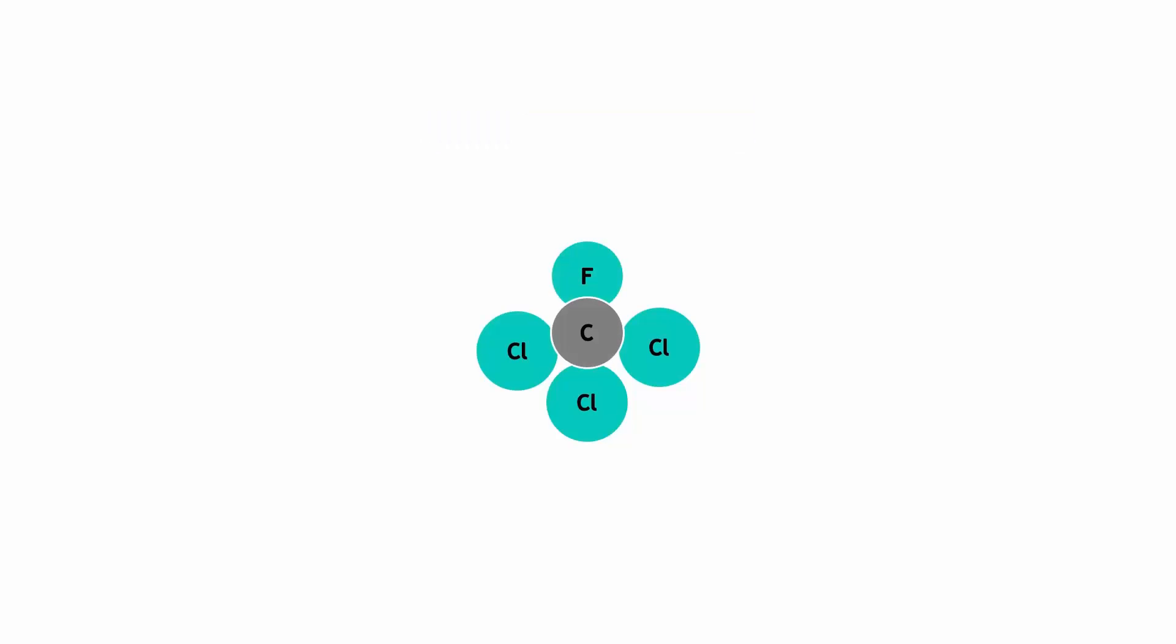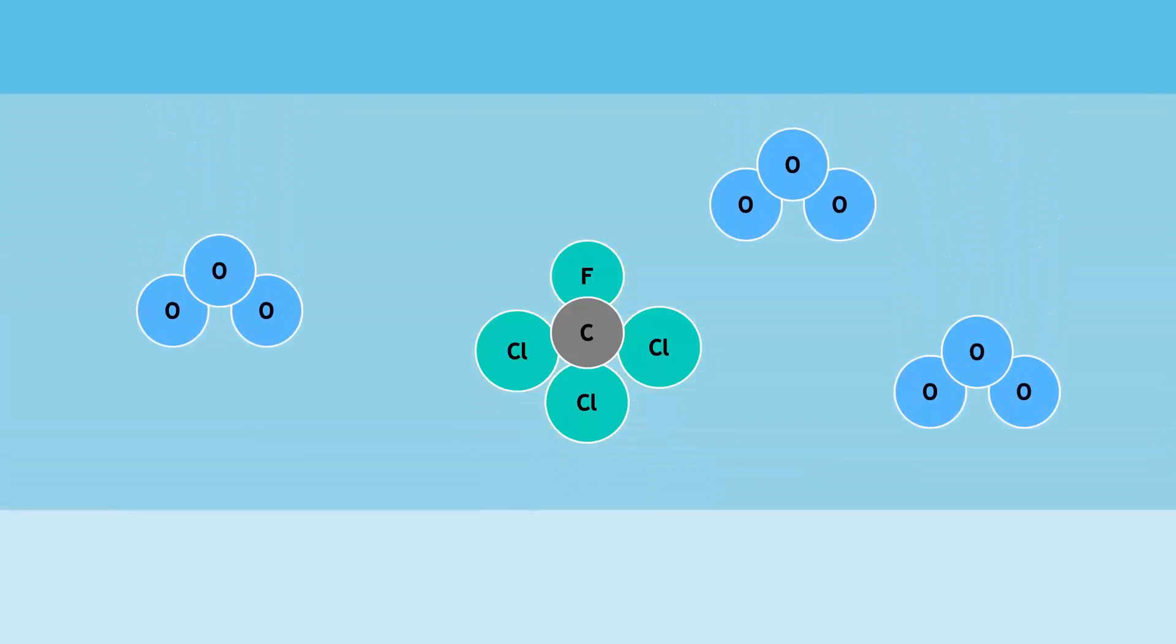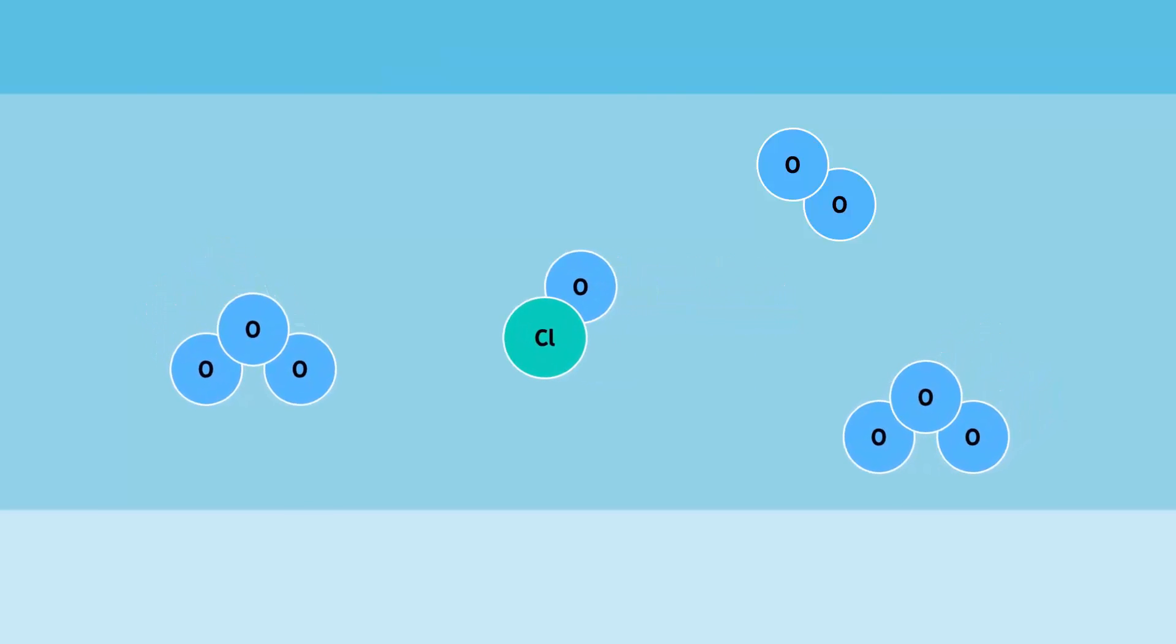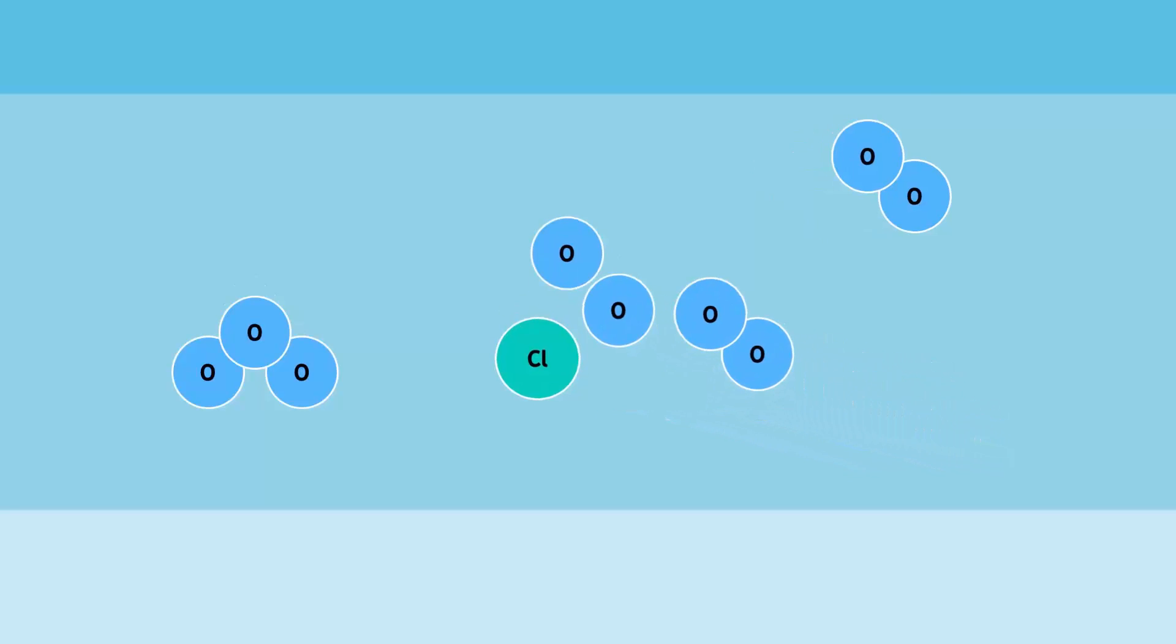When a chlorofluorocarbons molecule is released into the Earth's atmosphere, the ultraviolet rays of the sun cause it to break up and release a chlorine atom. The ozone molecule is highly reactive. As it reacts with a chlorine atom, it produces a single oxygen molecule and chlorine monoxide. Chlorine monoxide further reacts with another ozone molecule to produce another chlorine atom, which further reacts with more ozone molecules.